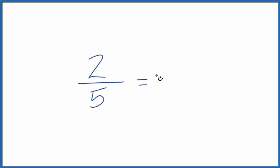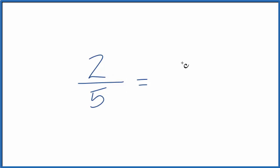Let's write a few equivalent fractions for two-fifths — that's two over five. What we're trying to do is find a fraction that has the same value as two-fifths, but written with a different numerator and denominator.